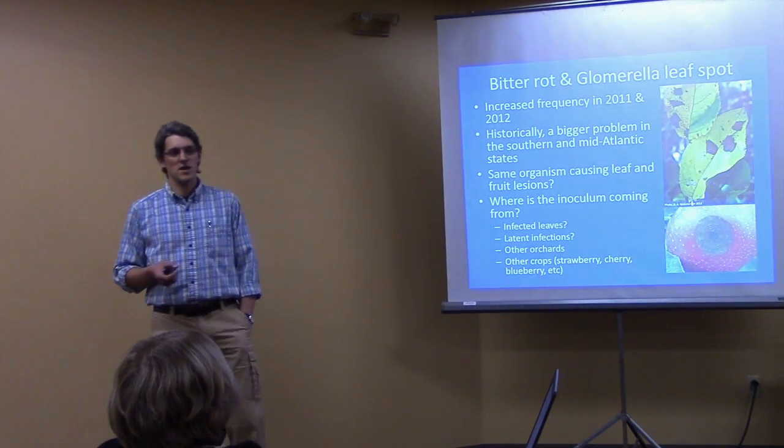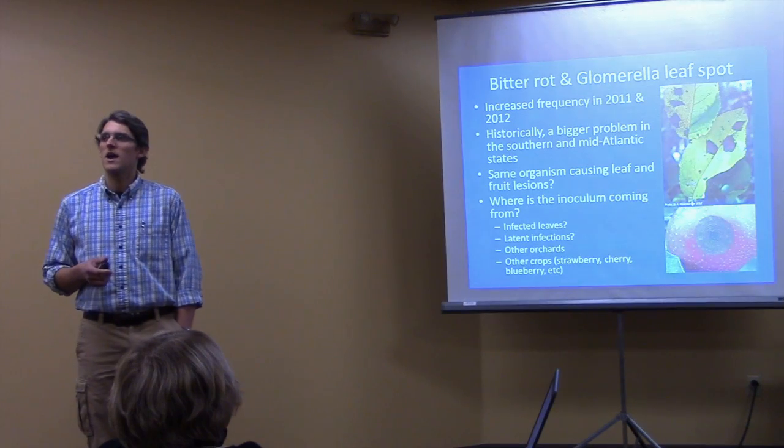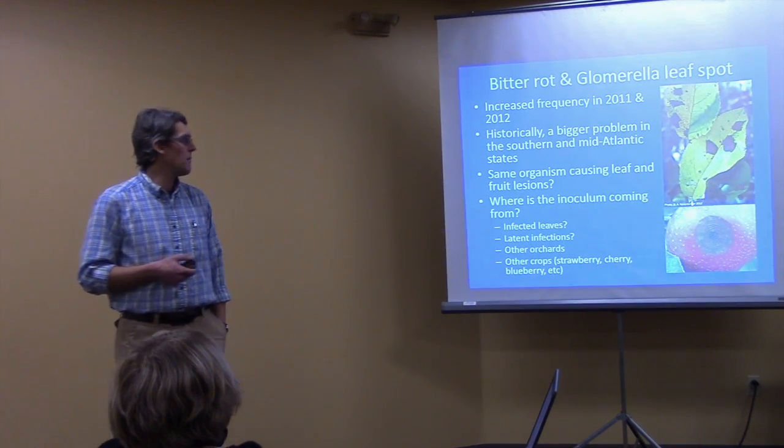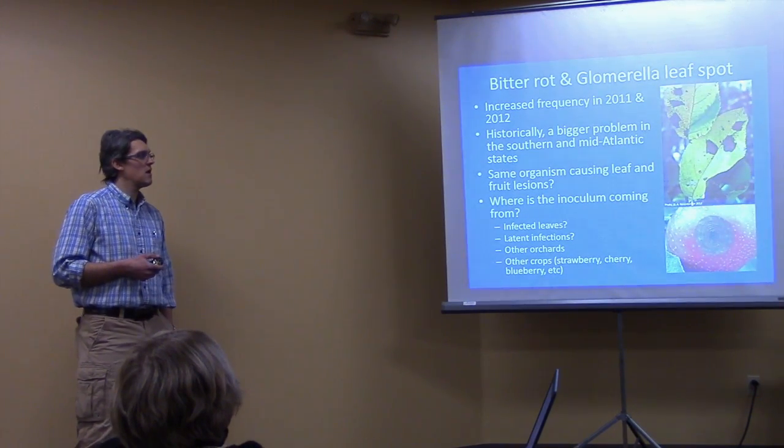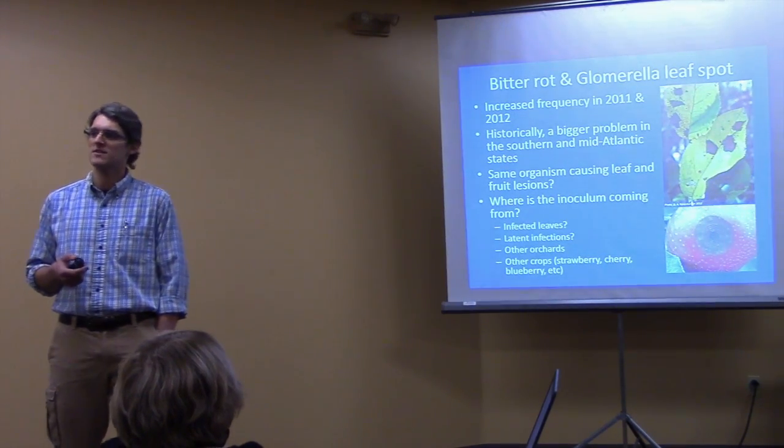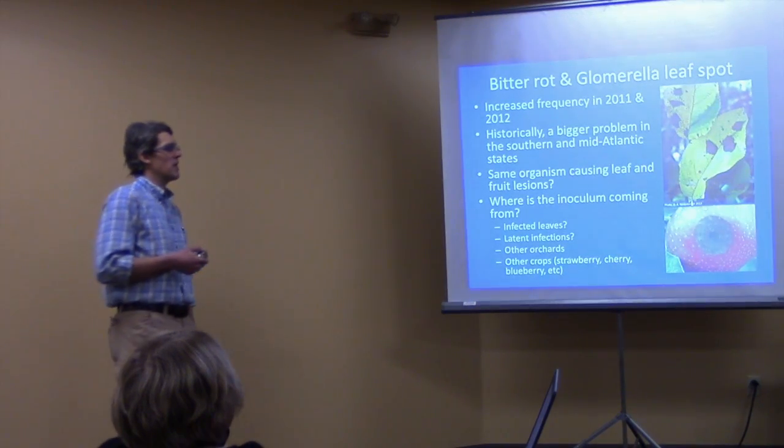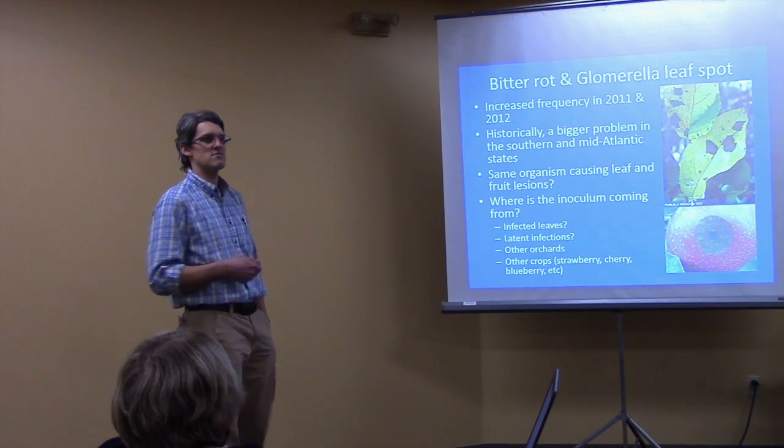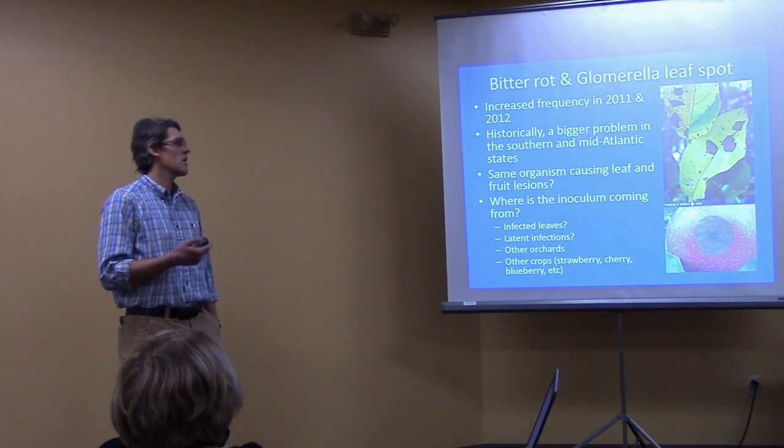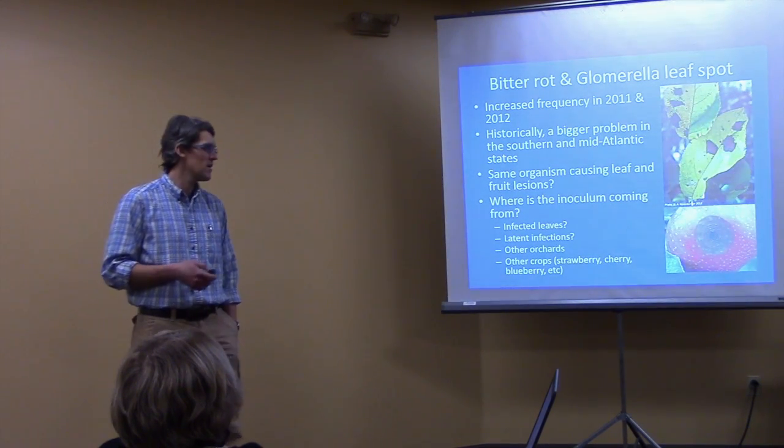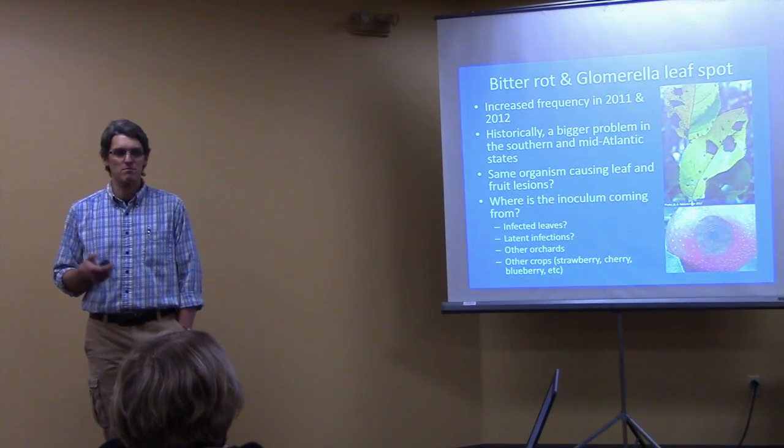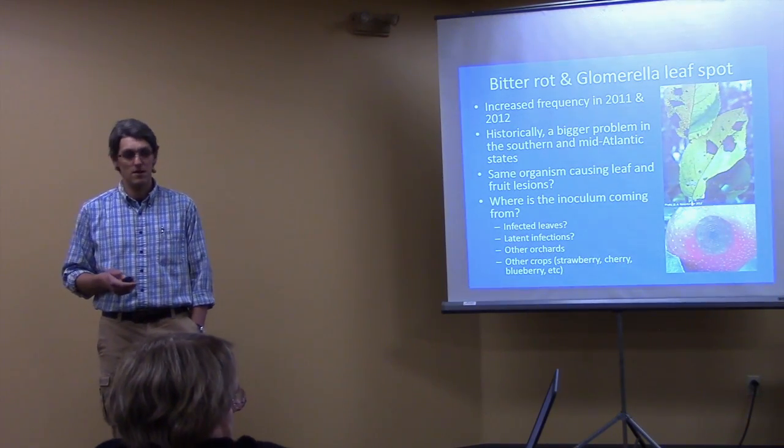The other project we're working on is a disease called bitter rot. This is a disease that has increased in prevalence in the Northeast. And we believe that a lot of this may have to do with climate change as well, as this is historically a more southern and mid-Atlantic apple disease. But we've seen outbreaks in New Hampshire, in New York, and then last year there was a really bad outbreak in Ontario. So what we're trying to investigate is where is the disease inoculum coming from? Is it coming from infected leaves, latent infections in the fruit, possibly other orchards or possibly even other fruit crops?